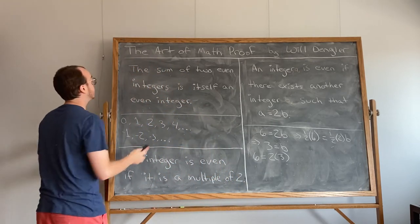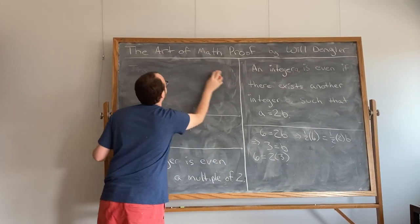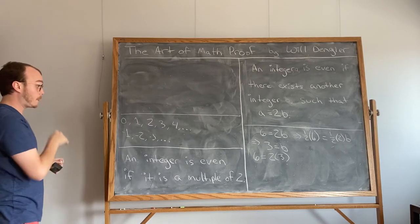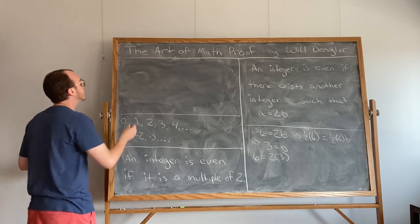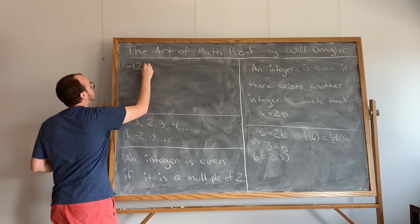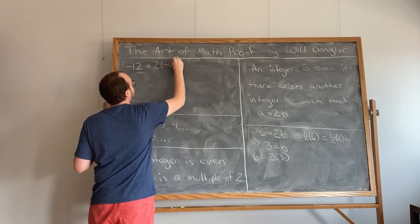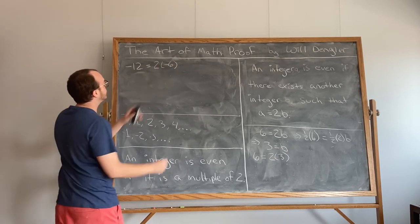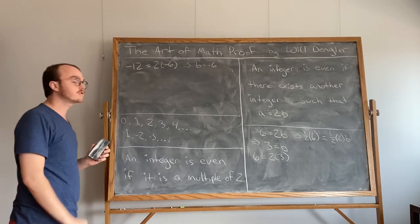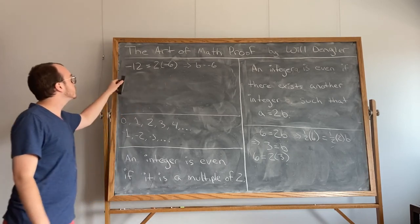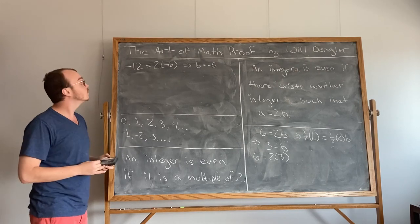One example isn't enough to show that it's always true, so let's look at another one. We'll do negative 12. Negative 12 is equal to 2 times negative 6. So in this case, our b would be negative 6. Negative 6 is an integer, and we can multiply it by 2 to get negative 12. So it seems to be working out.